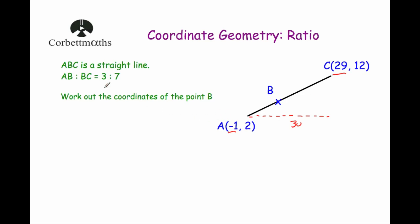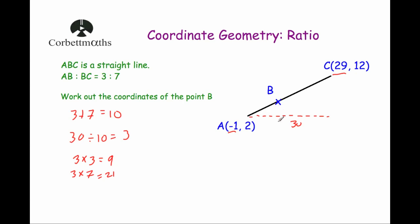So 3 plus 7 is equal to 10. We take the horizontal distance of 30 and divide by 10, which gives us 3. The line is in the ratio 3 to 7, so we multiply 3 by 3 and by 7, giving us 9 and 21. So point B is 9 across from A — starting at minus 1 and going 9 across gives us 8 — and then going another 21 across gets us to point C, which is at 29. That checks out.